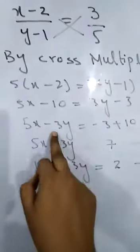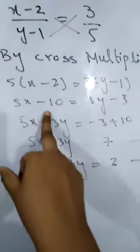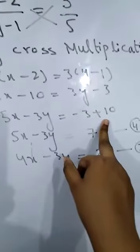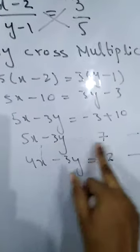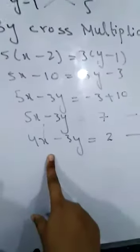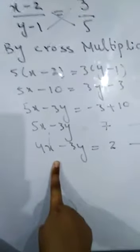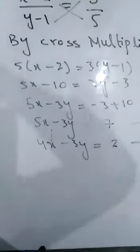5x minus 3y would be equal to 7. This is our equation 4 that we have found out by standardizing equation 2.